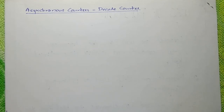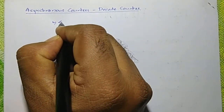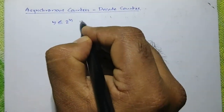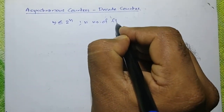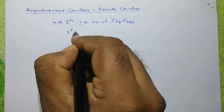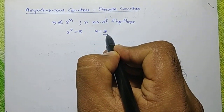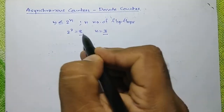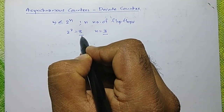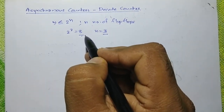In the last session, we have seen the design of a mod 8 asynchronous counter. We used 3 T flip-flops in that construction. The number of flip-flops used were decided after considering the modulus of the counter. We used the relation m less than or equal to 2 raise to n, where n is the number of flip-flops. So, 2 raise to 3 equal to 8, or n equal to 3. This means using 3 flip-flops, we can make a counter which counts 8 states. After these 8 states, it resets naturally.